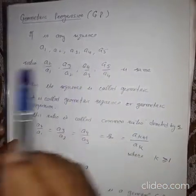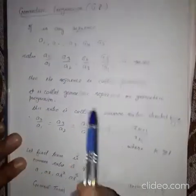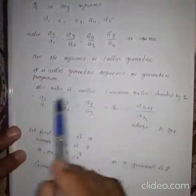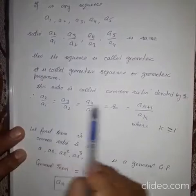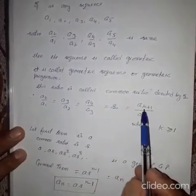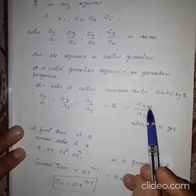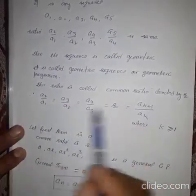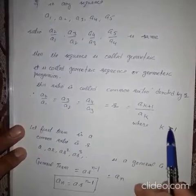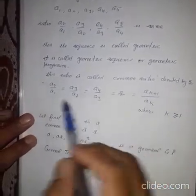In the AP difference, in GP ratio. So, ratio of two consecutive terms, that should be same. If you generalize, it is AK plus 1 upon AK. That should be same throughout by changing the values of K. And the value of K, that will be 1 or greater than 1.